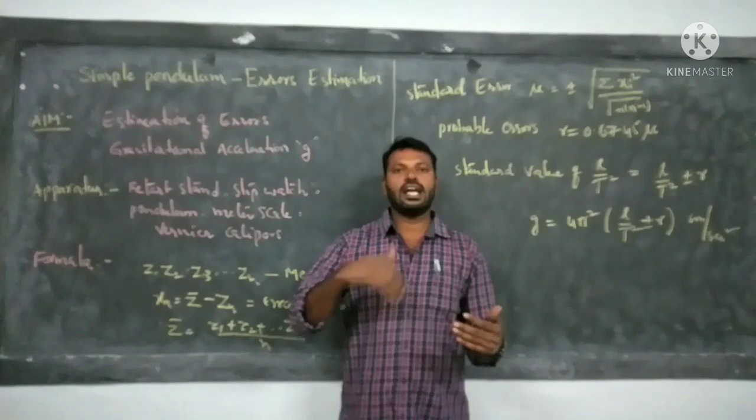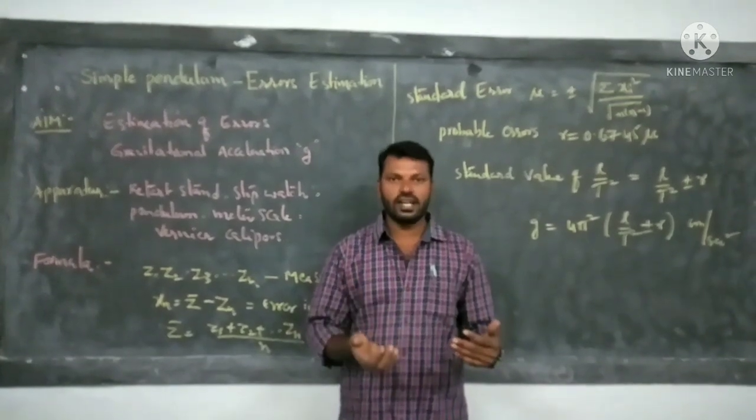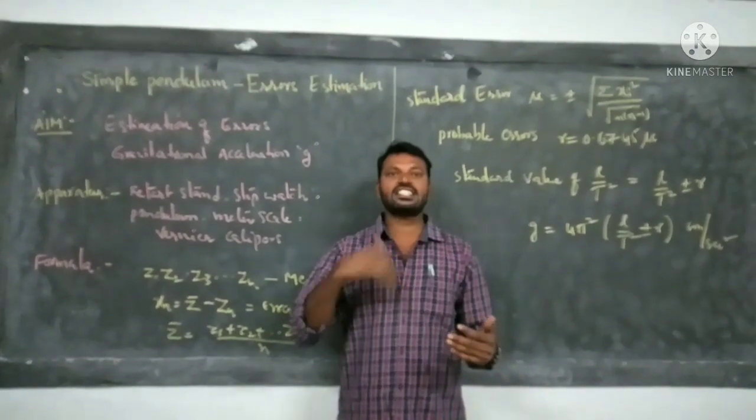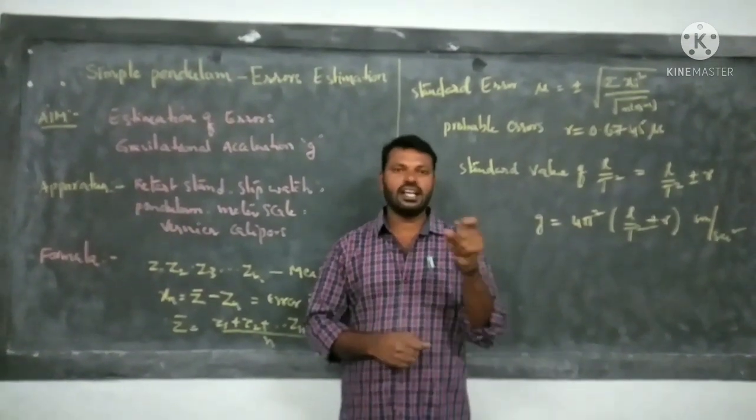From those error values, calculate Xn squared for each reading, then find the summation of all Xi squared values.